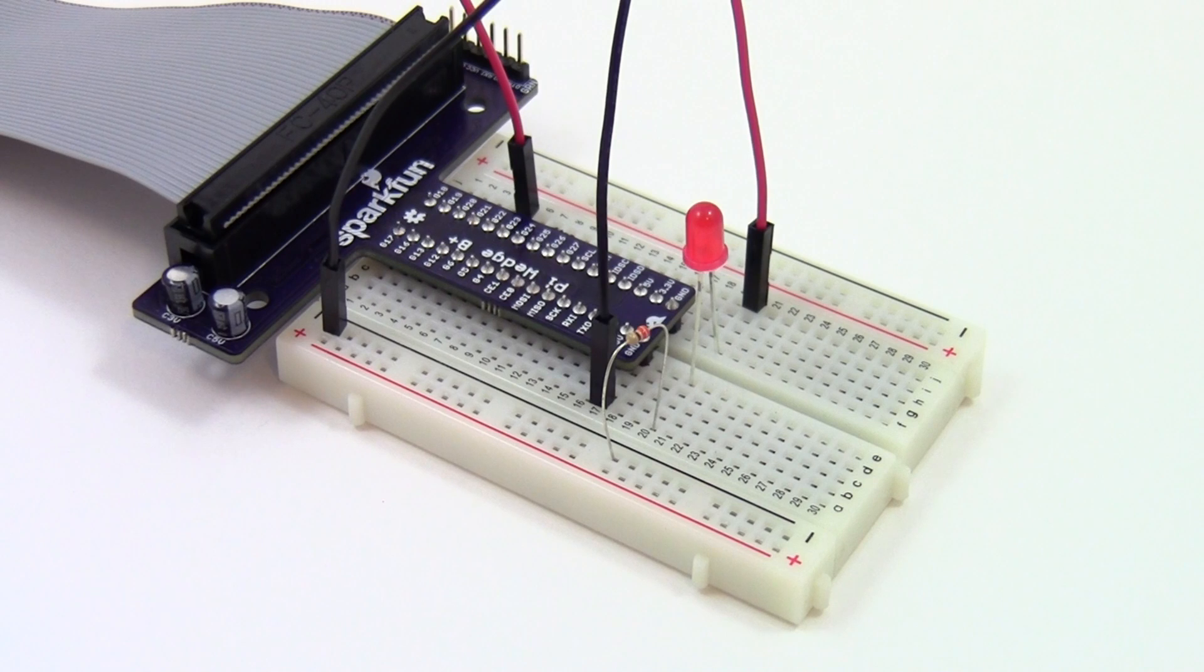So for example here, if I press the arrow key, you can hear the meow sound, but the LED doesn't light up. This indicates that my code is working, but there's something wrong with my circuit.